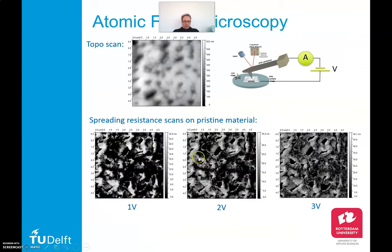We also did a topo scan and a spreading resistance scan with the pristine material. The spreading resistance measurement works by putting a voltage between the sample and the probe and measuring the current, which allows us to see the conductivity of the sample surface. You can clearly see that when we change the voltage to 1 volt, 2 volt, and 3 volts, the conductivity around the pores is better than in the bulk — so that's an interesting finding.